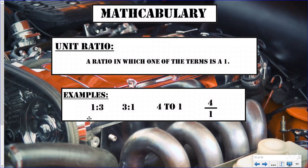For example, you might say there was one teacher for every three students — that's one to three. Or you could flip it: three students for every one teacher, written as three to one. Here again you have four to one — there are four kids to every one cake at the birthday party. You could also write it as a fraction; remember it looks like a fraction but it's not one. A unit ratio is just a normal ratio where one of the terms is a one.